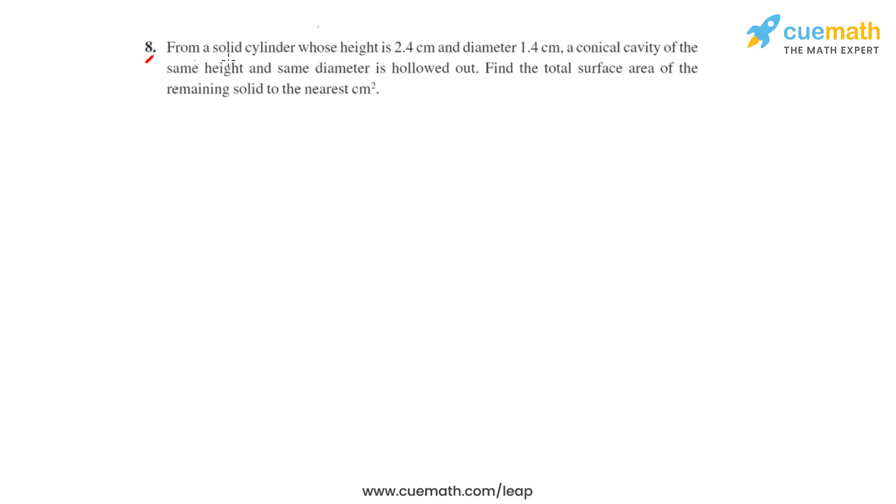Question number 8 says that from a solid cylinder whose height is 2.4 centimeters and diameter is 1.4 centimeters, a conical cavity of the same height and same diameter is hollowed out. The conical cavity which is hollowed out has the same height and diameter as the solid cylinder.